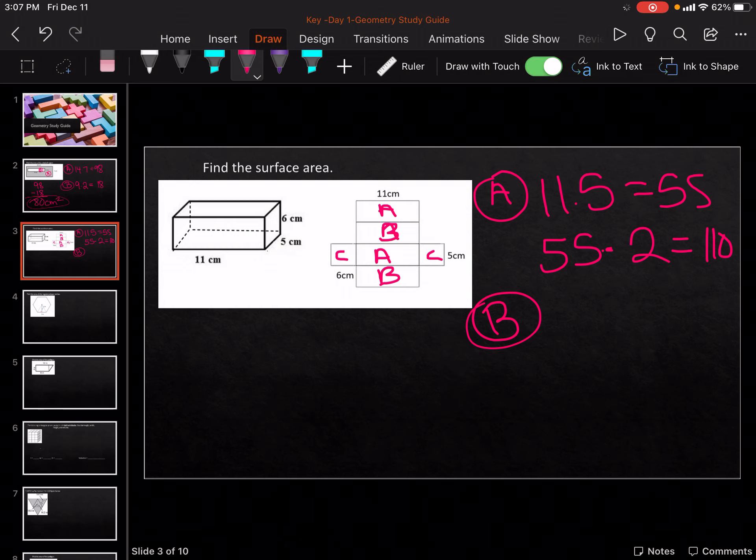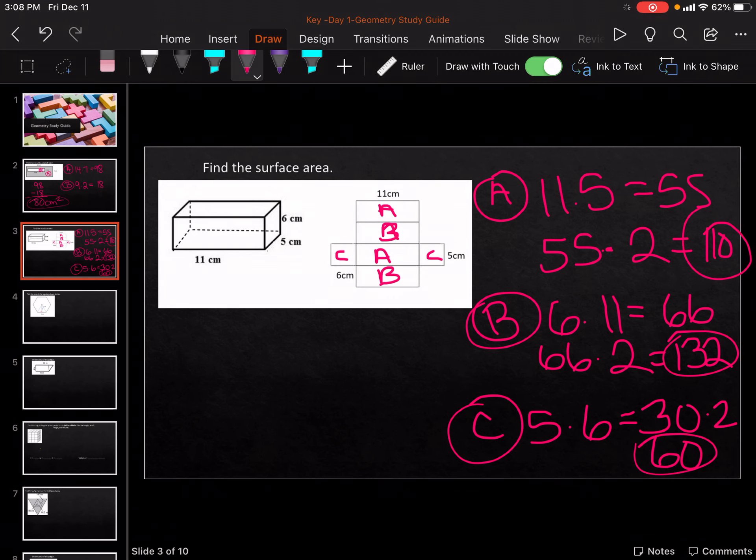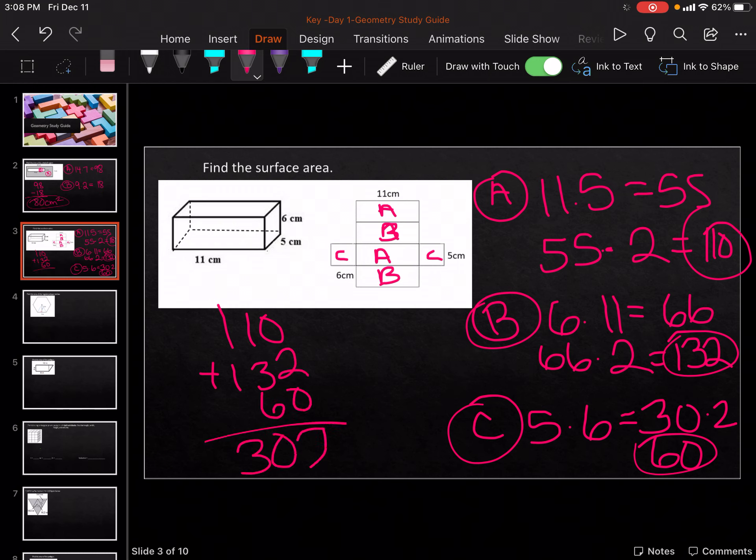And then for B, it's going to be 6 times 11, which is 66. 66 times 2, because there's two of them, 132. And then for C, it's going to be 5 times 6, which is 30, times 2, which is 60. So we're going to add all those numbers together. And that gets me 110 plus 132 plus 60 gives me 302 centimeters squared.